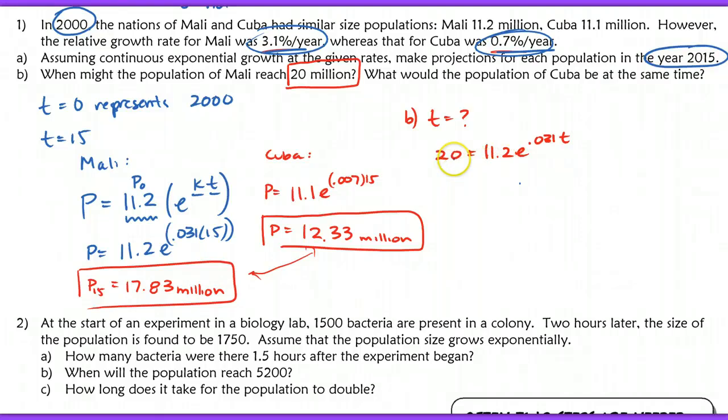To isolate T here, I just simply solve this as an exponential equation. I'm going to end up taking the log of both sides. First, though, divide out that 11.2, and further isolate the T here. So I have 20 over 11.2 equals E to the 0.031 T. Then I'm going to take the natural log of both sides. The natural log of E is going to cancel here, and I'm left with 0.031 T equals the natural log of 20 over 11.2.